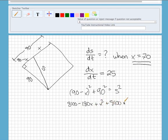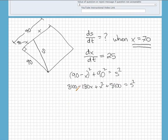Okay, and then we foil this thing out, so we'll get 8100 minus 180x plus x² plus 8100 equals s².